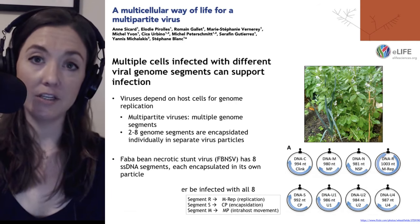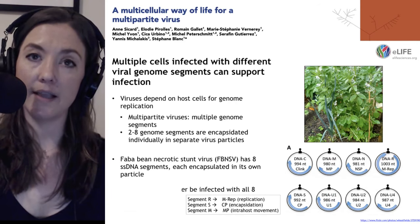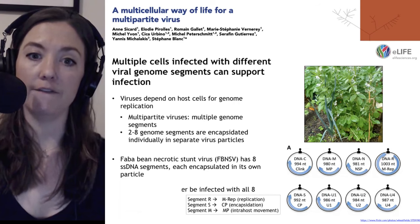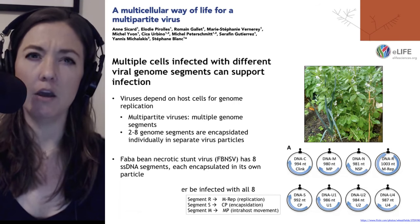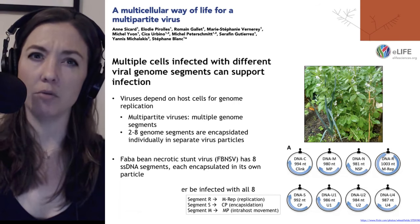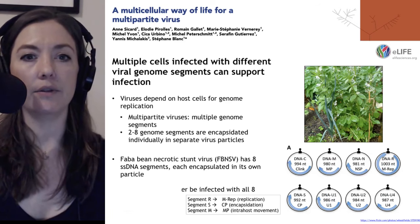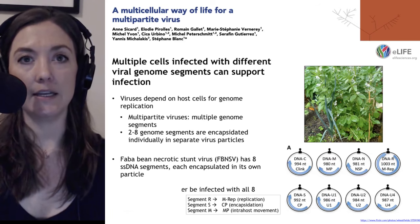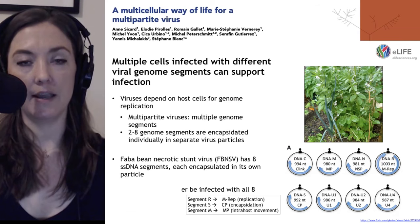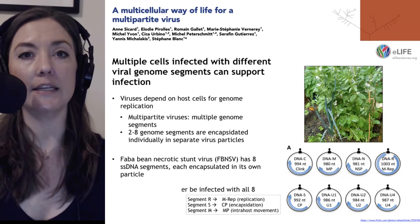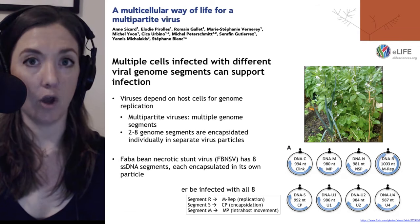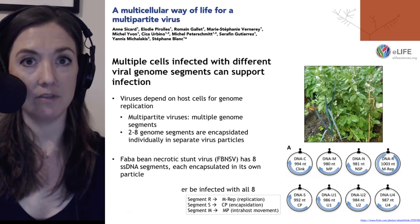The question arises: how can one cell ever be infected with all eight genome segments? It just seems like a very improbable event. The authors of this study wanted to work from a different hypothesis — they suspected that a cell does not need to be infected with all eight genome segments to promote viral infection.